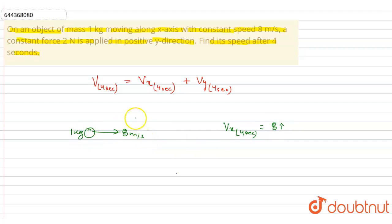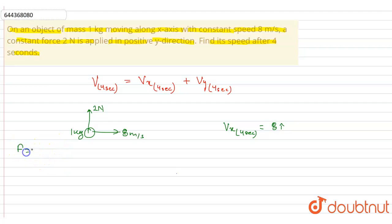Now, for velocity in the y direction — a constant force is acting in the positive y direction, which is 2 N. We have to find the acceleration in the y direction. Force equals ma, so acceleration equals force divided by mass. Force is equal to 2 N and mass is equal to 1 kg, so acceleration is equal to 2 m per second squared.